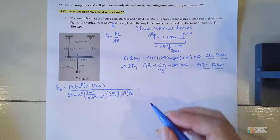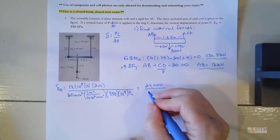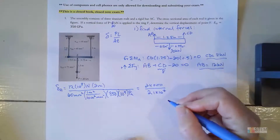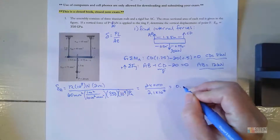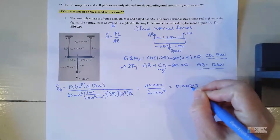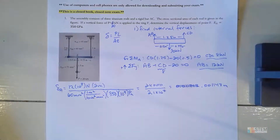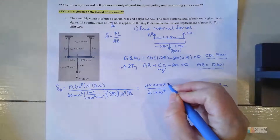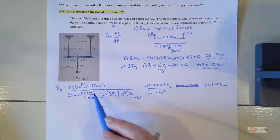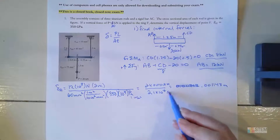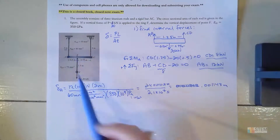Working through the math, you get 24,000 on top and 2.1 × 10⁷ on the bottom, giving delta_A = 0.001143 meters. I always like to convert everything to newtons and meters. Note that pascals are newtons per square meter, so the units work out to meters. That's the displacement for just point A — the left side of the rigid bar AC.